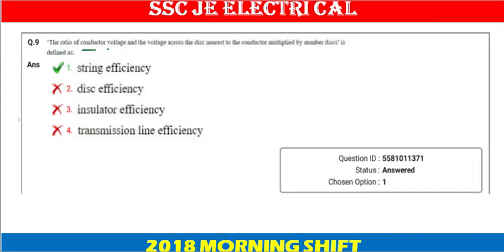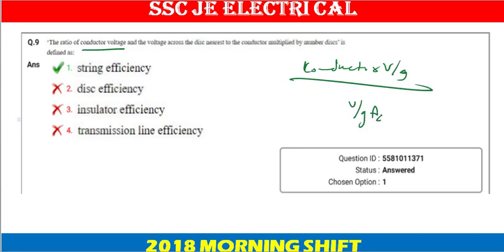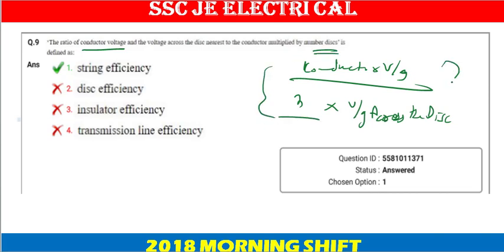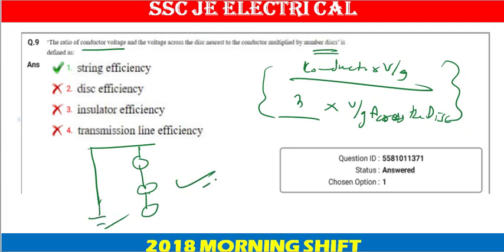Next question: the ratio of conductor voltage — that is, conductor voltage divided by the voltage across one disk, multiplied by n number of strings — this formula relates to power systems and is called string efficiency.